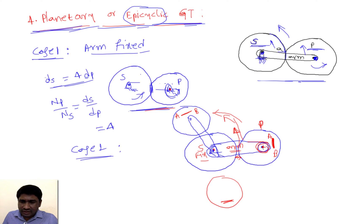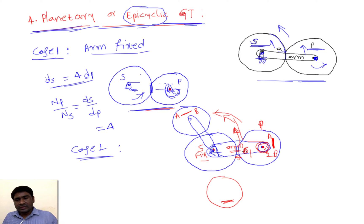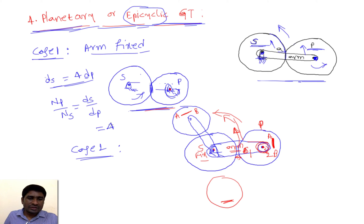The person sitting on this shaft — let's say person S1 — and one more person S2 sitting on the shaft of P: these two persons S1 and S2 actually rotate one revolution with respect to each other. In the previous case, shaft P made four rotations. But here, shaft P nP made only one rotation.